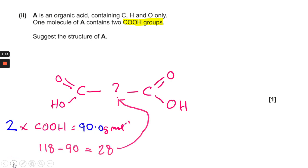So therefore we know that our total molar mass for our compound is 118. Subtract the two COOH groups from that and that gives you 28, which allows you to put in something along the lines of CH2 twice.